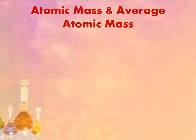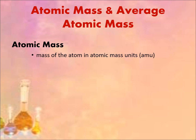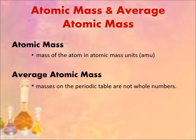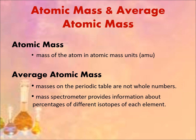First, let us have atomic mass and average atomic mass. When we say atomic mass, it is the mass of the atom in atomic mass units, or AMU. While average atomic mass values are the masses on the periodic table that are not written in whole numbers — meaning they are expressed in decimal numbers. So your periodic table mass is the weighted average of all the isotopes of each element.